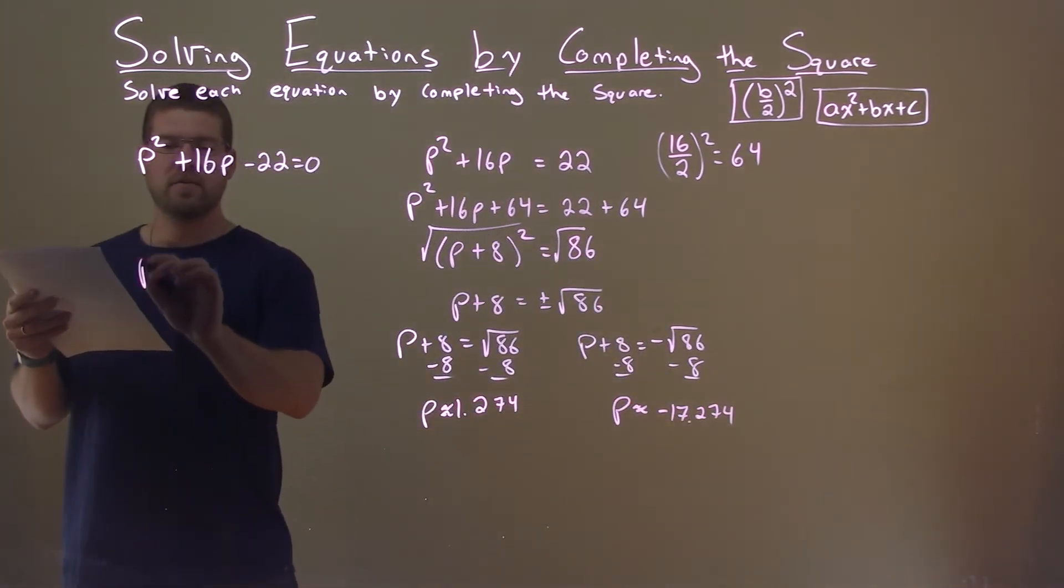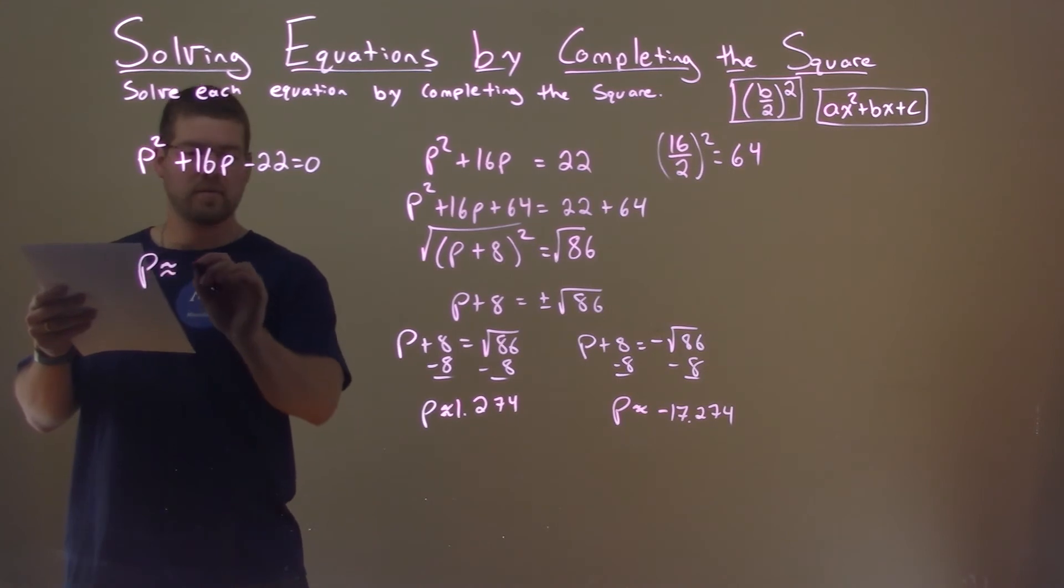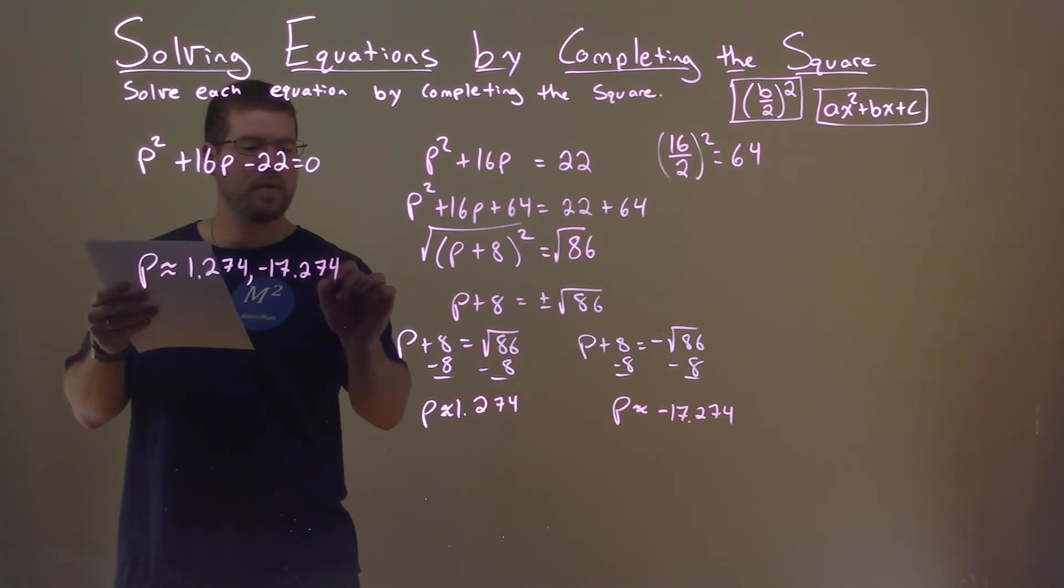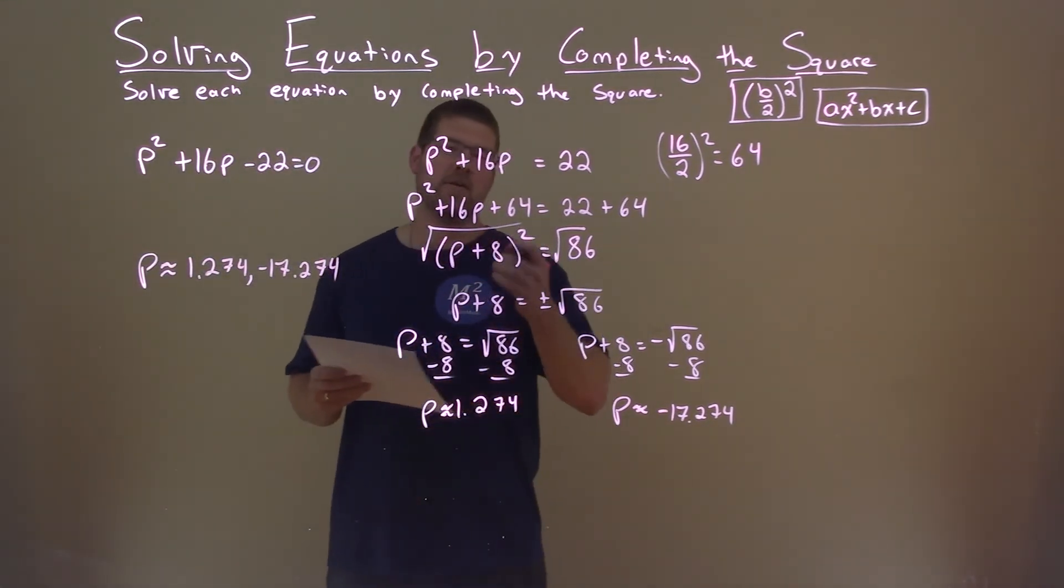So if we write those two values here as one statement, p is approximately 1.274 and a negative 17.274. And those are our final answers.